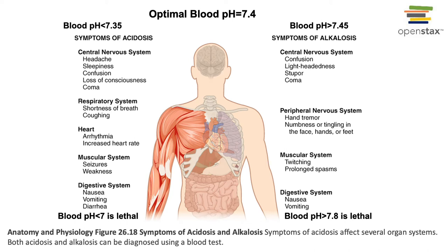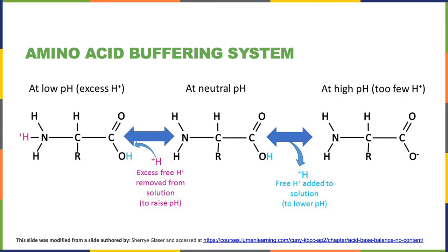There is a lot of overlap in the symptoms associated with acidosis and alkalosis, including disruption of the nervous system functions and nausea and vomiting. These symptoms are largely related to disruption in the structure of proteins at the molecular level that results from a blood pH outside of the optimal range. Disrupting the structure of proteins will disrupt the function of proteins, and then this will disrupt the function of cells, tissues, organs, and organ systems. A pH buffer is a chemical system that prevents rapid changes in the pH of a solution.